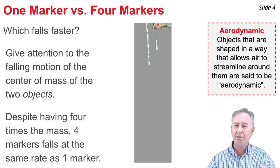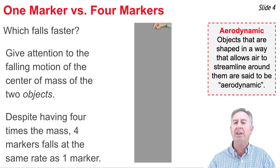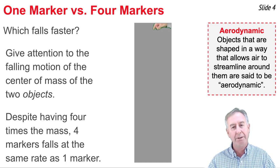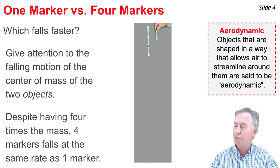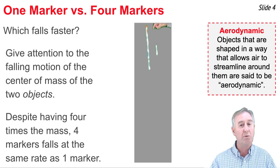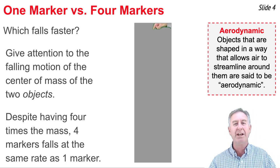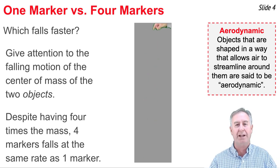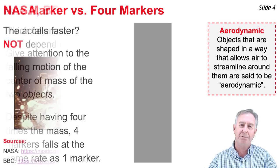Now if you watch this little video over and over again, one thing that you'll notice is despite having four times the mass, the four marker system is falling at the same rate as the one marker system. The acceleration of each object is the same, regardless of the mass of the object.